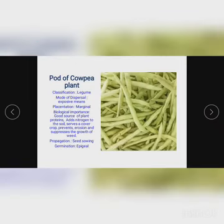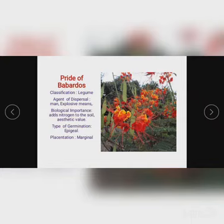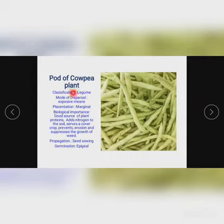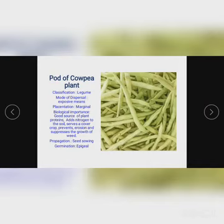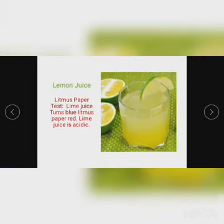Pride of Barbados and Calopogonium (calpi) are closely related with very similar characteristics — both have marginal placentation, are both legumes, and both add nitrogen to the soil. One key difference is that the seeds of Pride of Barbados are poisonous, while those of Calopogonium are used for food. For Calopogonium, classification is legume, mode of dispersal is explosive, placentation is marginal, and it is a good source of plant protein, adds nitrogen to the soil, serves as cover crops, prevents erosion, suppresses weed growth, and is propagated by seed sowing with epigeal germination.